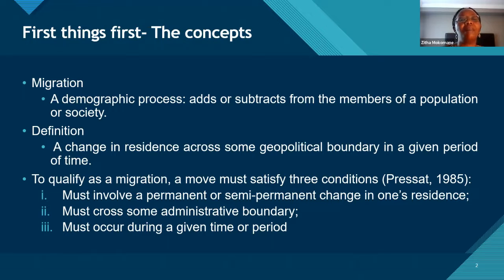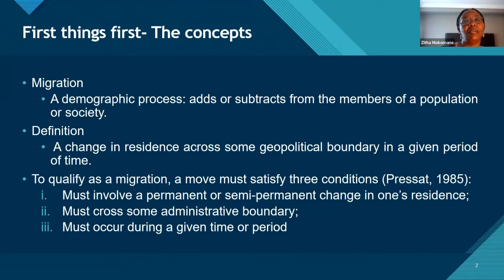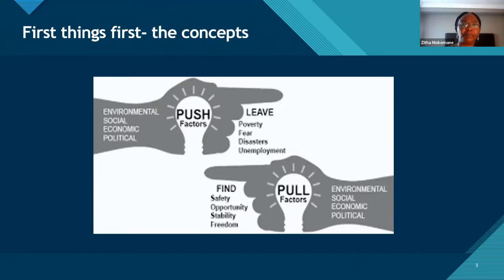You must also cross some administrative boundary — either internal within a country or an international boundary — and it must occur over a given period of time, such as over a year, six months, or five years. Those are the core concepts that make the discussion relevant. So why do people migrate?